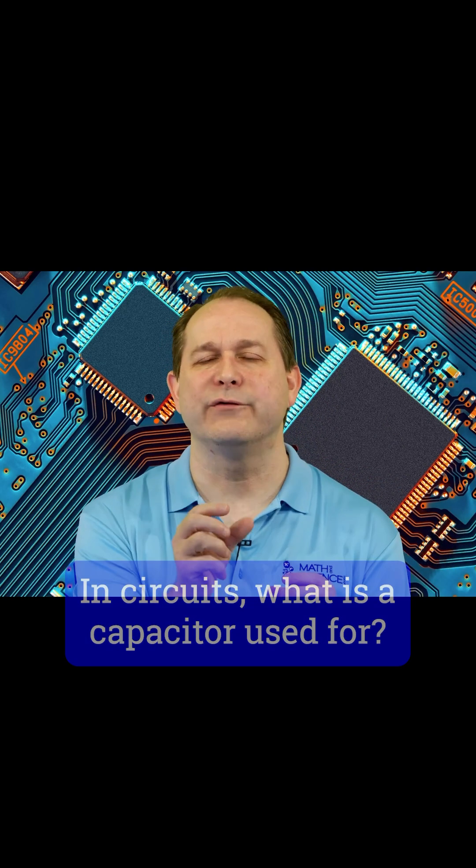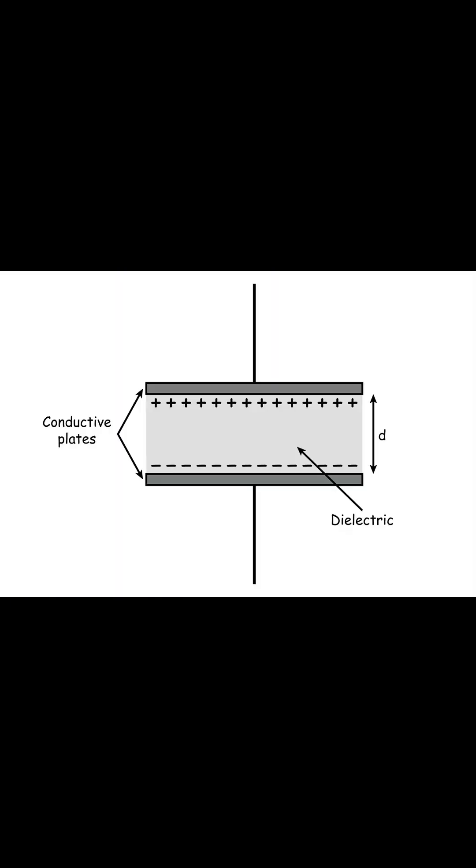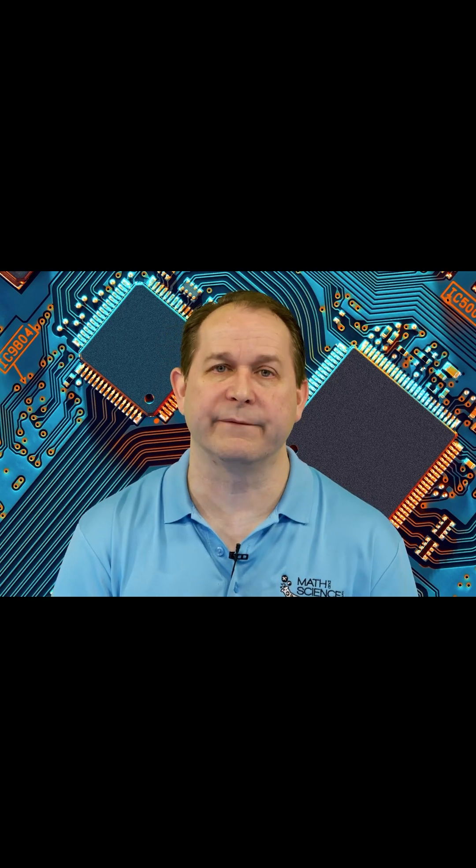If you hook a DC source up to a capacitor, the capacitor will charge up. Because the capacitor has a gap with an insulating material between the plates, it can accept electric charge and charge up electrons on the large surface area on the inside. But once it's charged up, no more electricity can flow. So it'll charge up but then will not allow any electricity to pass any further.